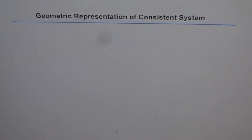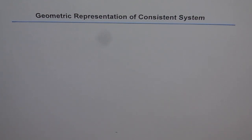Geometric representation of consistent systems. Here I will introduce you to planes and their interaction. Whenever we have two or more planes, they can intersect. They can intersect in a line, in a point, or they may not intersect. If they intersect, then we say that we have a solution and we say the system is consistent.